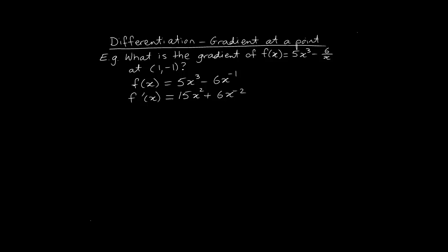Since it's true for any value of x, if I want the gradient at a particular value of x, all I need to do is substitute in that value. So here at the point (1, -1), the x-coordinate is 1. So I'm going to be subbing in x = 1 to find the gradient at that particular point. So f'(1) will be equal to 15 plus 6.